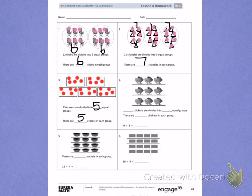Number 4. Blank chickens are divided into blank equal groups. My first blank is asking for my unknown number, which in this case is the total amount of chickens I have. I can count to find out how many chickens I have.